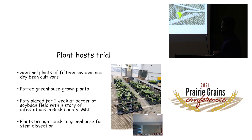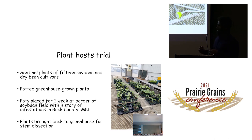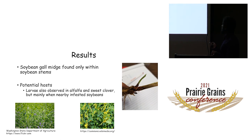A trial conducted by Bruce used 15 soybean and dry bean cultivars grown in a greenhouse, then placed at the border of a soybean field with a history of gall midge infestations for one week before being brought back to the lab for dissection. Soybean gall midge was found only within soybean stems — not on the other plants. However, we know they can feed on alfalfa and sweetclover when those fields are close to infested soybean fields.